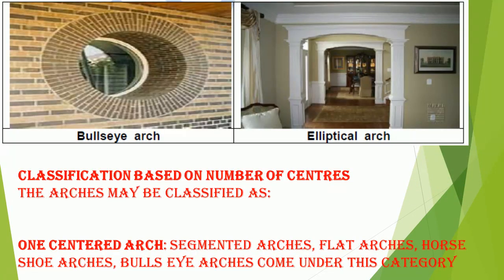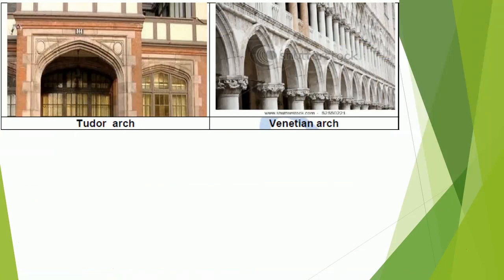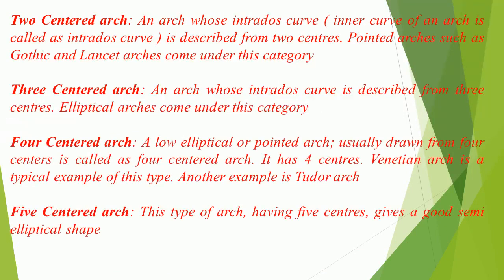Classification based on number of centers: 1-centered arch includes segmental arches, flat arches, horseshoe arches, and bullseye arches. 2-centered arch has an intrados curve described from two centers; pointed arches such as Gothic and Lancet arches come under this category. 3-centered arch has an intrados curve described from three centers; elliptical arches come under this category.